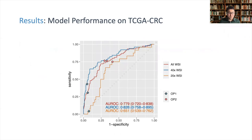The model achieved an AUROC of 0.779 on the whole TCGA CRC dataset, and its performance was even higher when tested on the 40x subset with an AUROC of 0.826. We observed a significant performance drop on 20x slides. Since all tiles were generated at 20x resolution regardless of base magnification level, this performance drop cannot be explained by the difference in base magnification level alone.